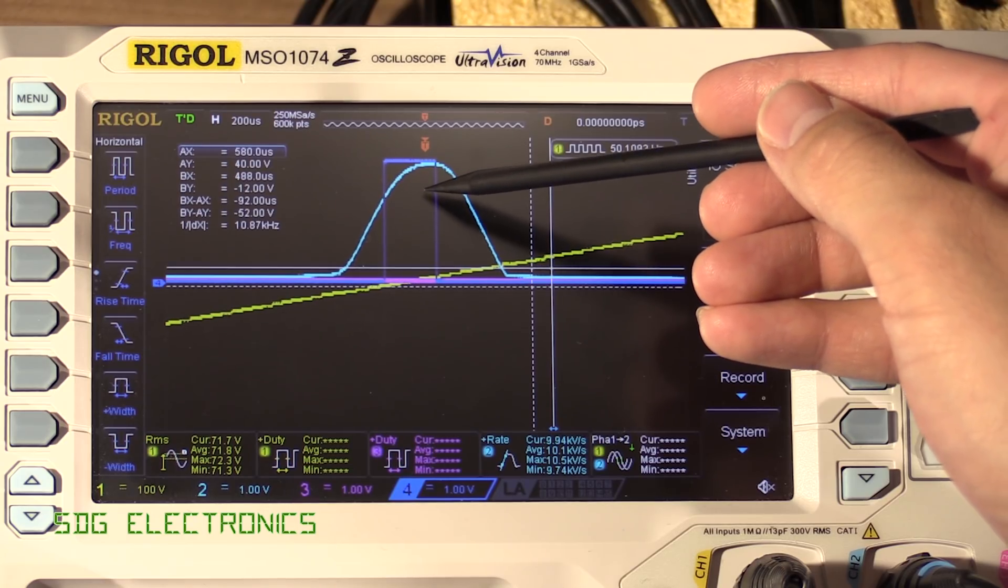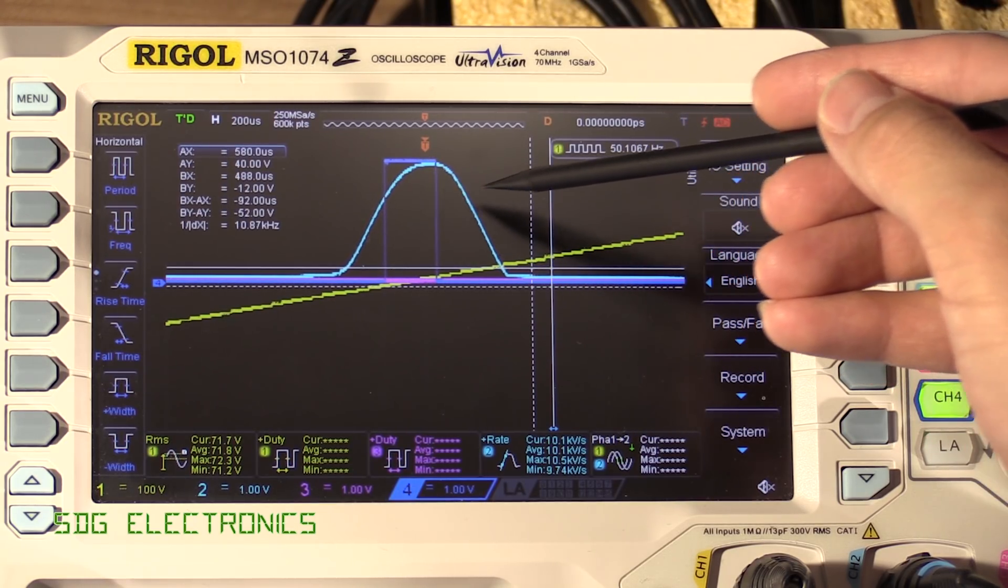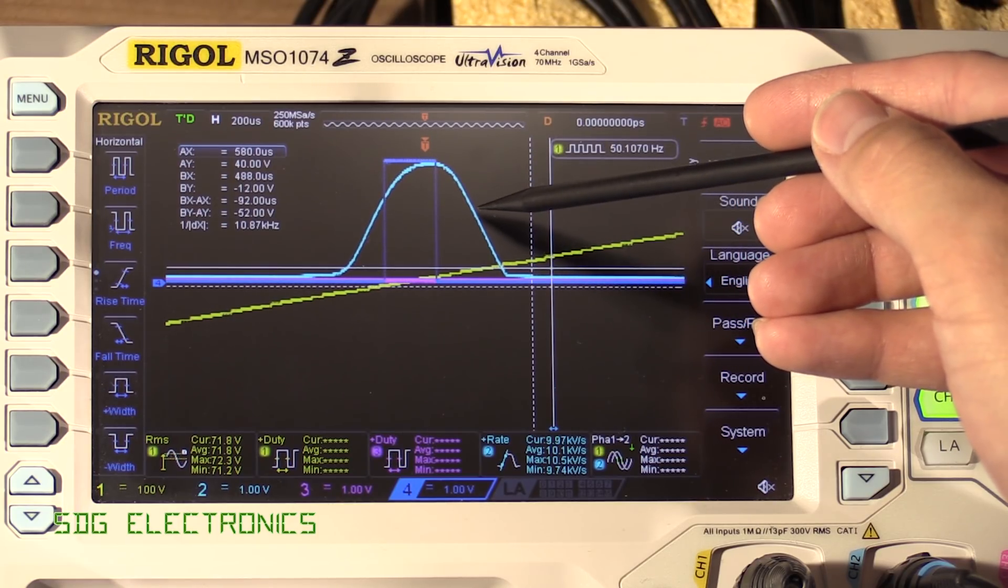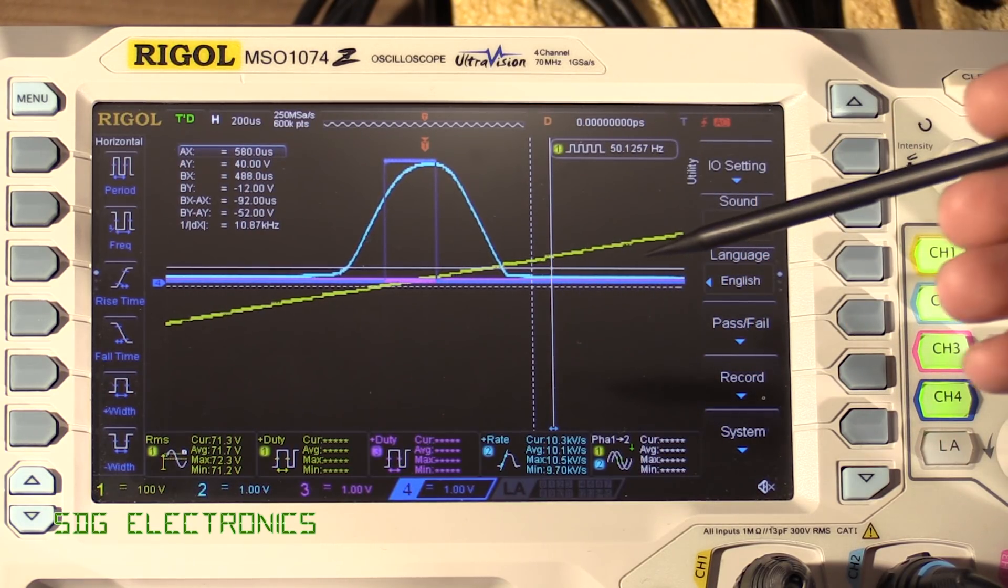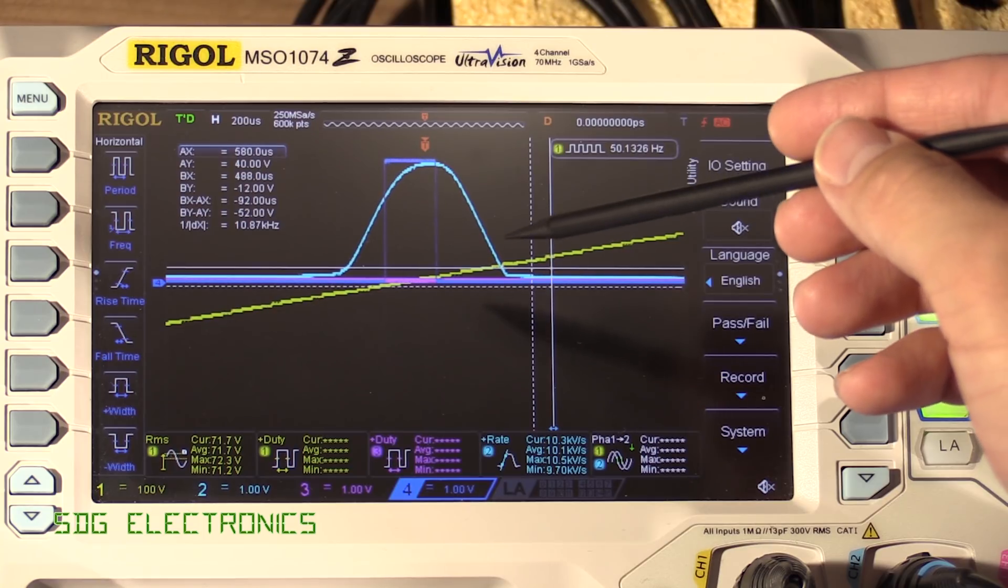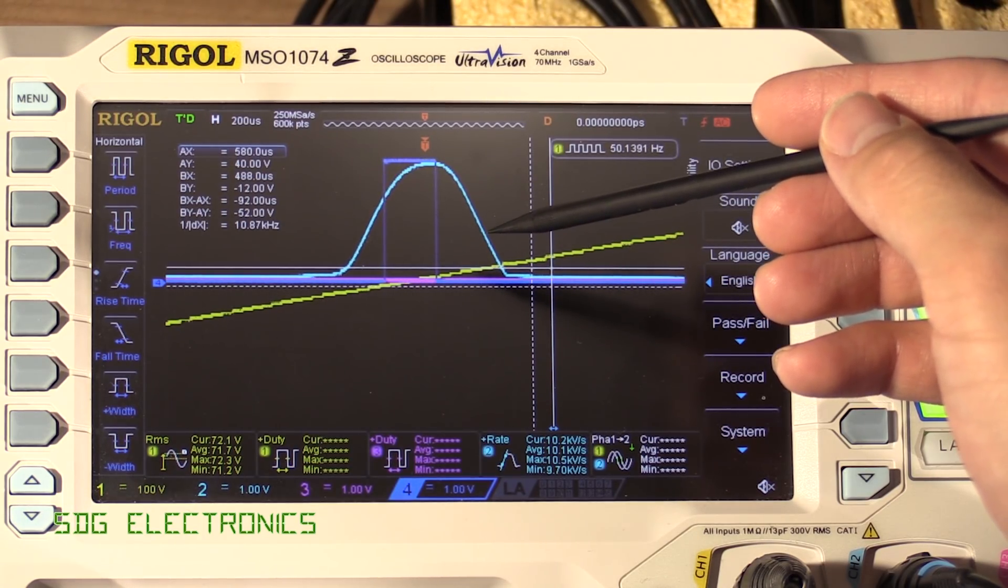so it's 200 microseconds before the centre of the zero crossing point and we were triggering on the falling edge so it's somewhere around here so another 200 microseconds after that and including all of the delays in the software we were triggering about 35 to 40 volts on the AC waveform at that point.